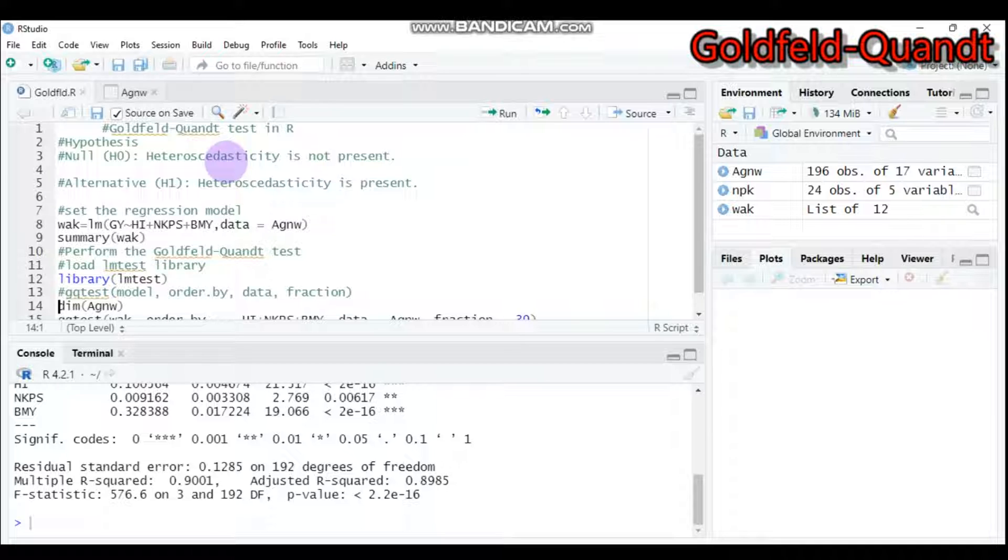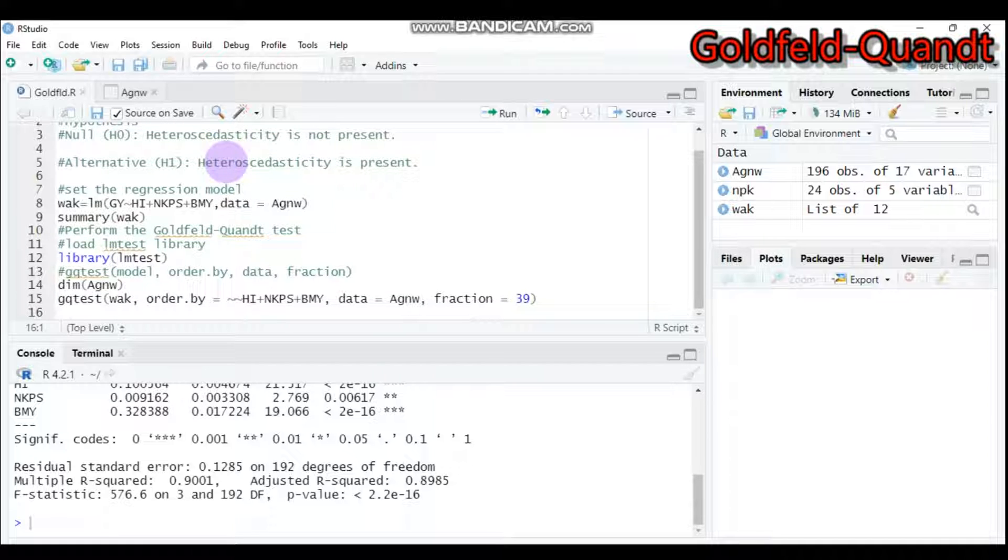Let's perform the Goldfeld-Quandt test. In order to do that, we have to load the lmtest package. First you have to install this package if you haven't, but if you already have it, just call the lmtest package using the library function. The function for testing heteroscedasticity using the Goldfeld-Quandt test is gqtest followed by the model, which is the regression model that you created using the lm function.